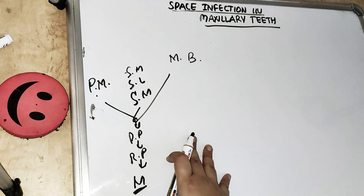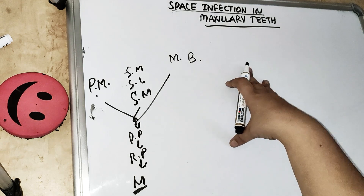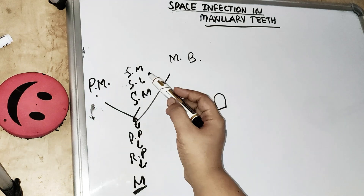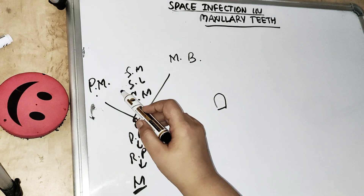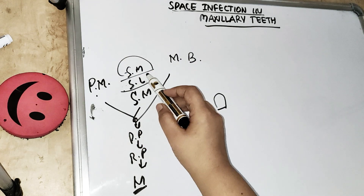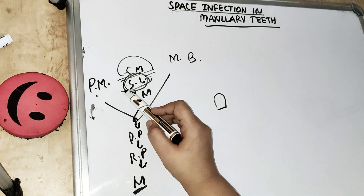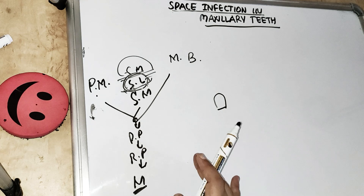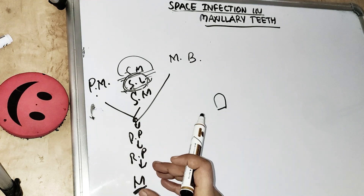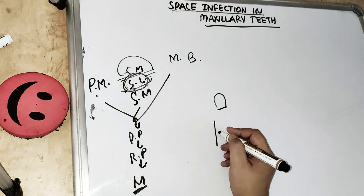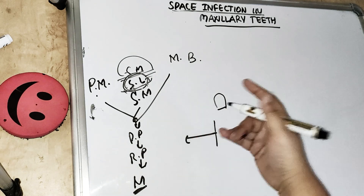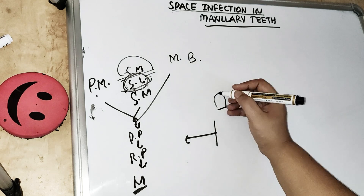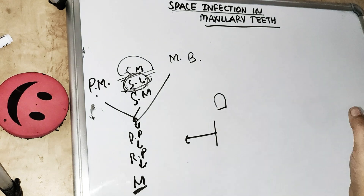Talking about the maxillary space — for maxillary teeth, the anterior teeth are actually all different from each other, whereas for mandibular anterior teeth they were mostly the same, draining into the submental and sublingual spaces. But there can also be associated swelling in the vestibule because of the thinning of the buccal cortical plate, since the infection can either go down or spread outside through the buccal cortical plate. So there are two cases — one important thing in maxillary teeth is that every tooth is different.